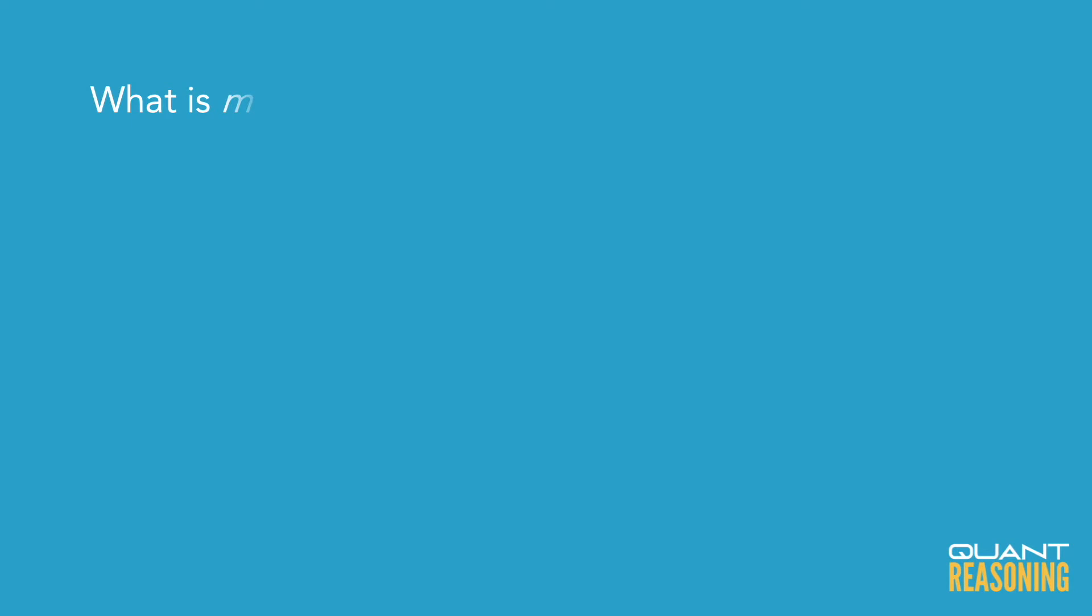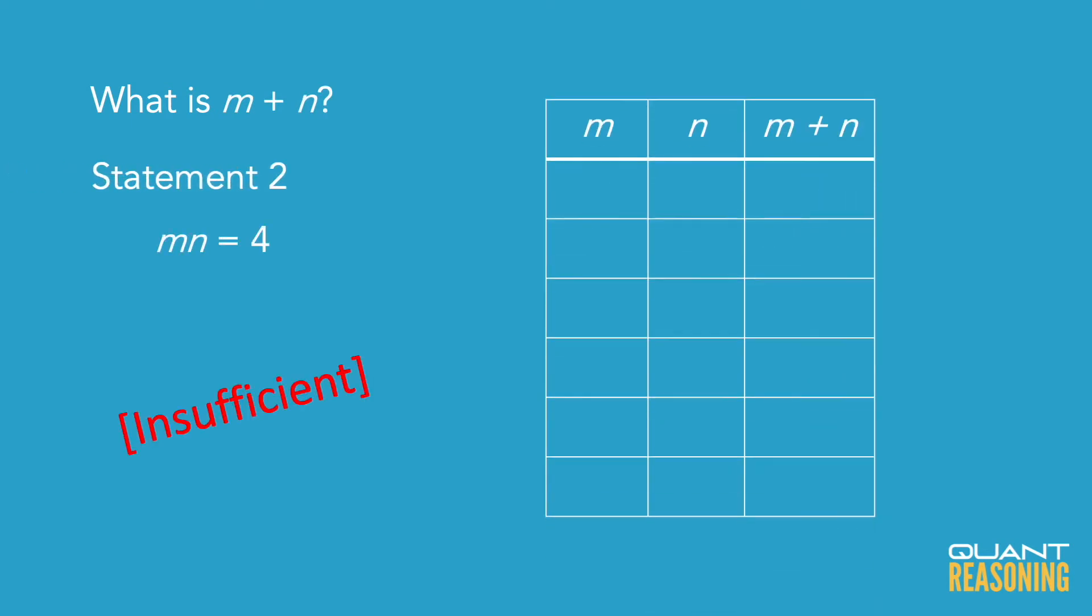In this case the product of m and n isn't even a prime number, it's four. So are they one and four? Are they two and two? Those would lead to different sums, right? One plus four is five but two plus two is four, and they could also be the mirror images of those.